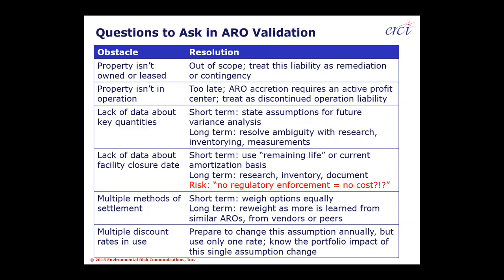A couple of questions useful in a due diligence process: check if a property isn't owned or leased — if so, a liability is out of scope, and an environmental remediation liability or contingency is the appropriate measurement, not an ARO. If a property isn't in operation, it's too late — ARO accretion requires an active profit center and ongoing business; otherwise the liability should be treated as a discontinued operational liability.